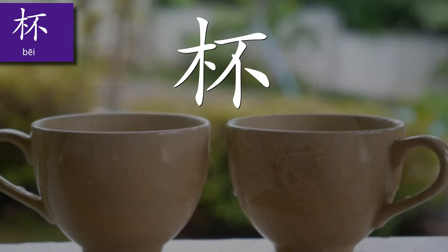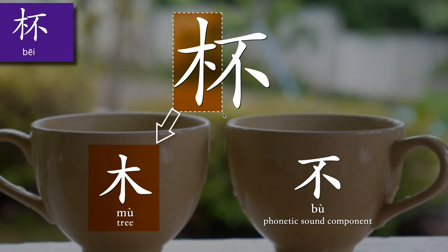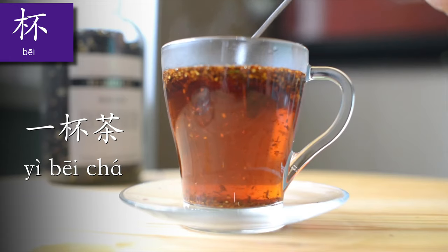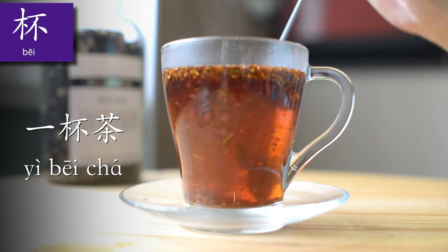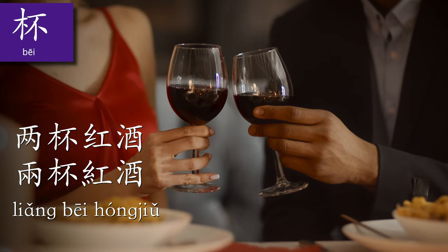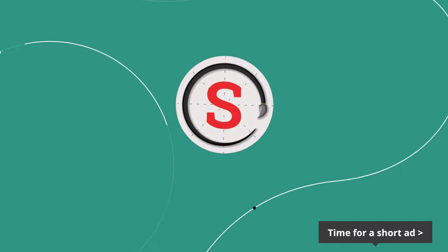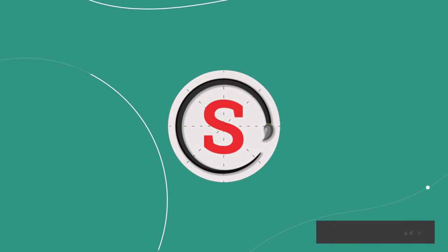Number four: 杯 (bēi). This is the measure word for cups and glasses. The left part of the character has the same wood component 木 as in 本 — cups in the old days were made of wood, so it makes sense to have wood as the building block of this character. 一杯茶 (a cup of tea), 两杯红酒 (two glasses of red wine), 三杯啤酒 (three beers).